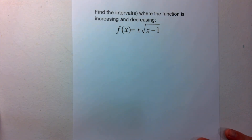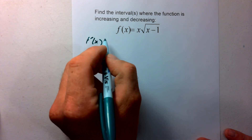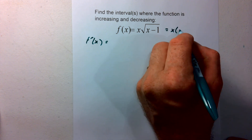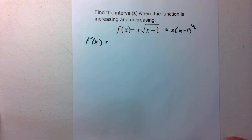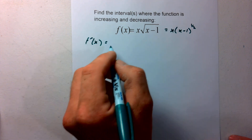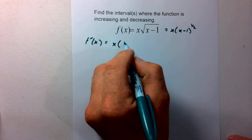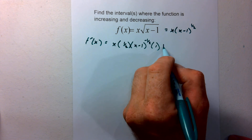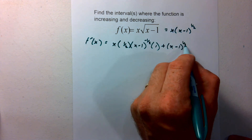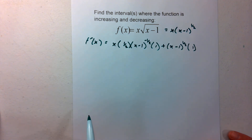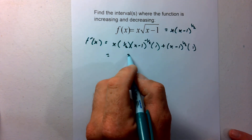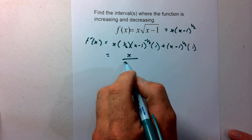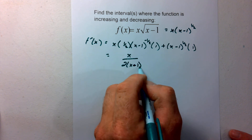I have one last example. Here we have a product rule since there are two variable expressions. I'm going to rewrite this as x times (x minus 1) to the one half. Applying the product rule: first term is x times the derivative of the second, which is one half times (x minus 1) to the negative one half times 1.